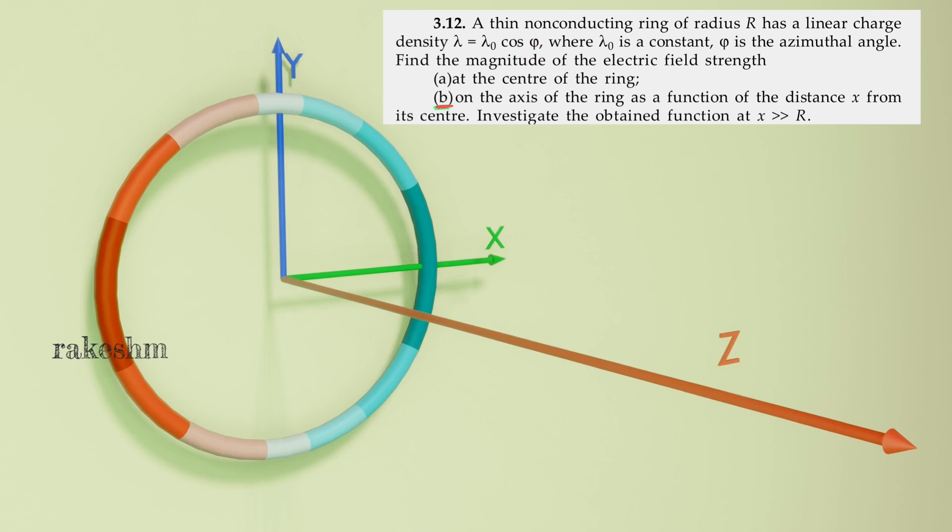Putting phi equal to 90 degrees we get lambda equal to 0. So that is why I have put a white color here. So maximum charge here and this charge density is decreasing and becoming 0 here.